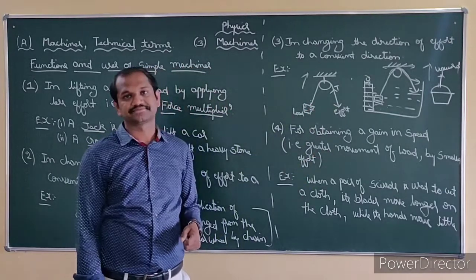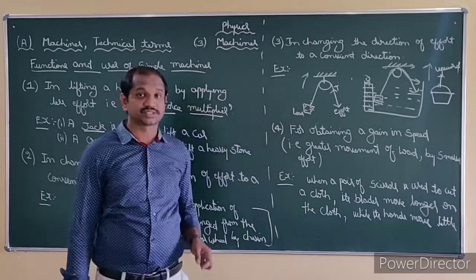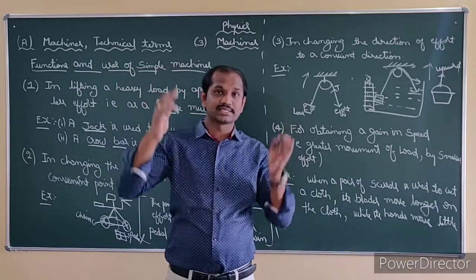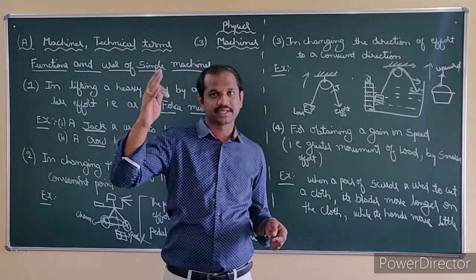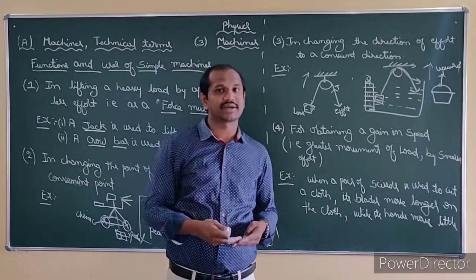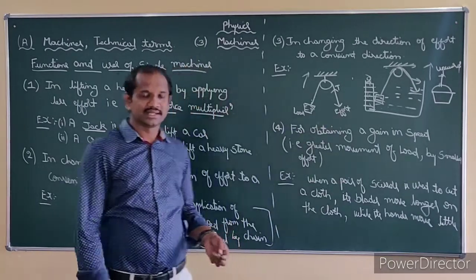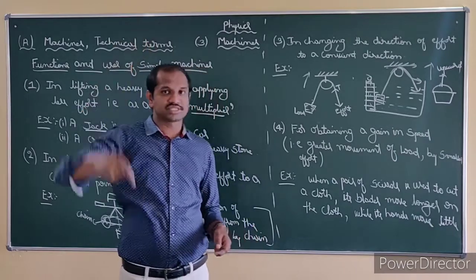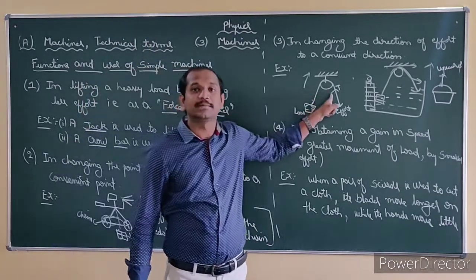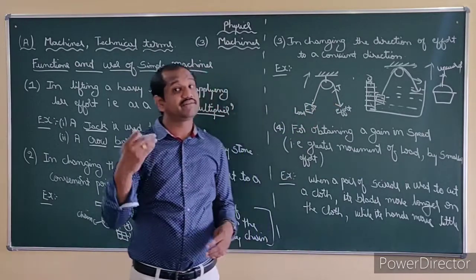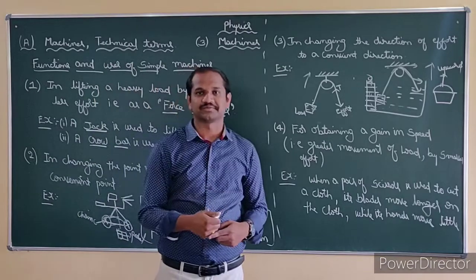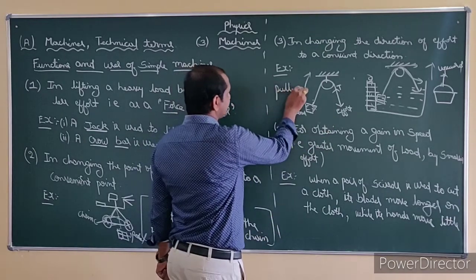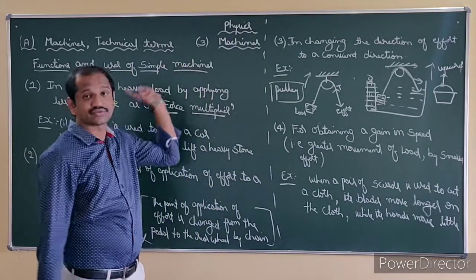This is the use of a pulley — changing the direction of effort. For example, in the construction of a house — apartments, second floor or first floor — they won't carry cement and stones from down to up by hand, going against the force of gravity. Instead, they use a pulley. You might have seen where they tie sand bags and two members are below pulling while one member on the first floor receives it — using the machine called a pulley, doing the work very fast and with less effort.